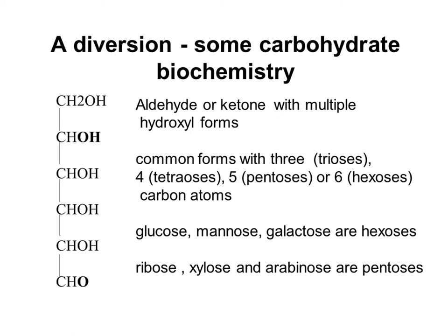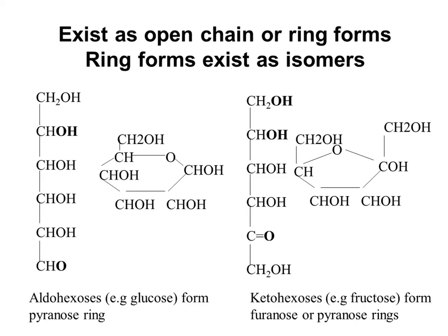One important property of carbohydrates is that they can exist either as an open chain or as a ring structure. For example, both glucose and fructose are identical in terms of their chemical formula, which is C6H12O6. However, glucose can exist as a pyranose ring, which is a six-membered ring structure.